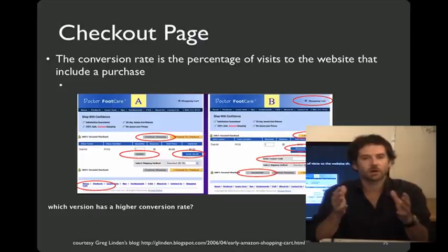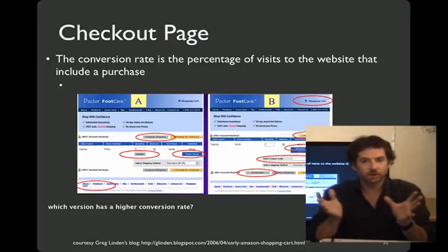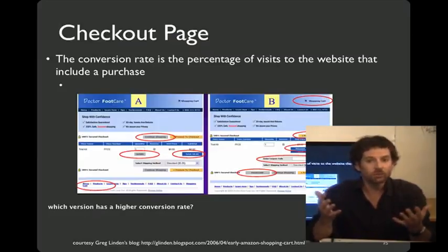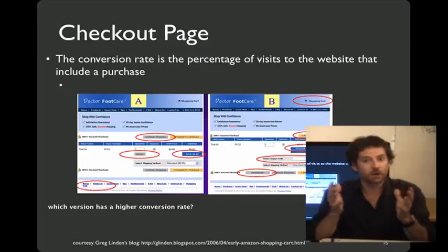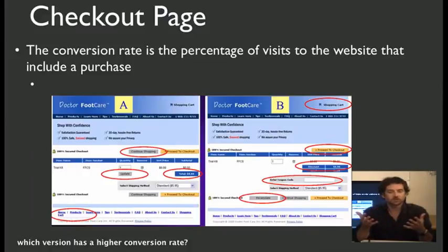All of the examples we've seen so far show a case where the designer intended to create a new variation and then measured the impact. It's also important to pay attention to your measurements even for design changes that you think won't have any impact. Here's an example of a shopping cart from Greg Linden's blog, where on the left we have a page that yielded a large number of conversions. On the right, what was intended to be a routine change dropped the number of conversions precipitously.